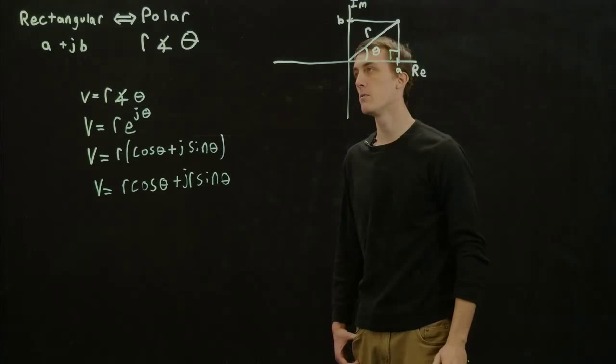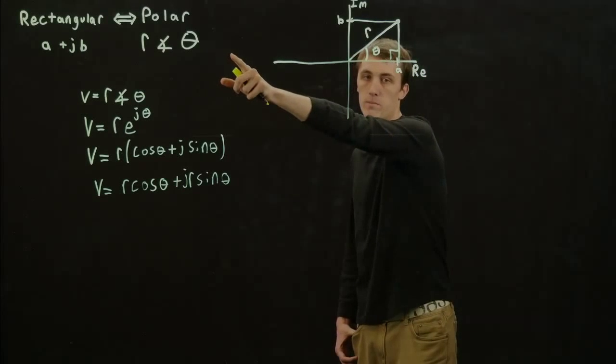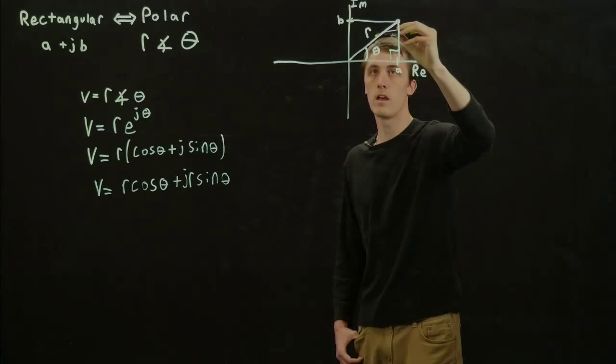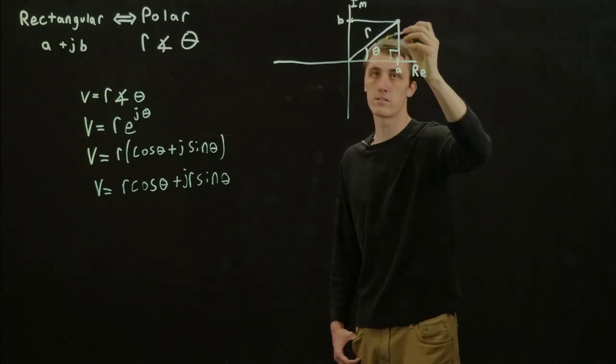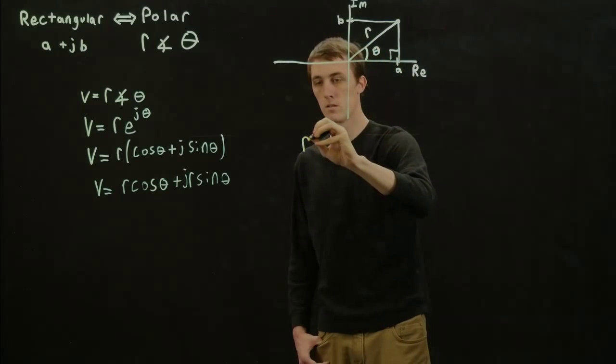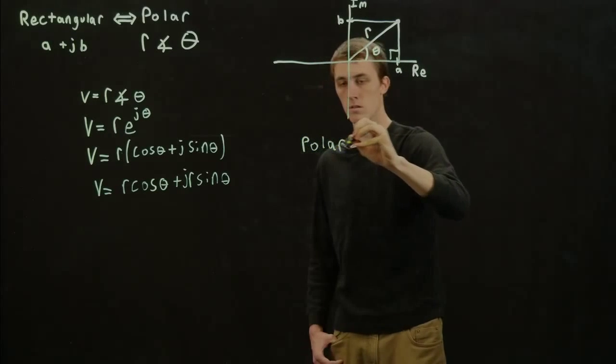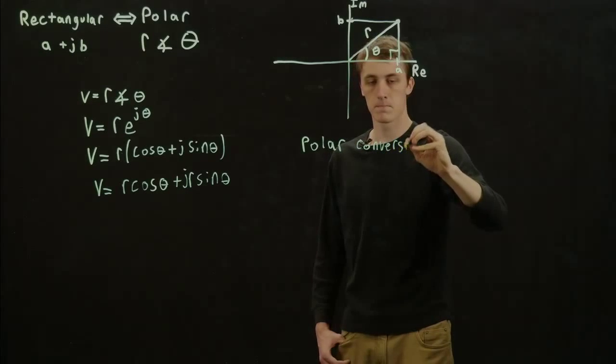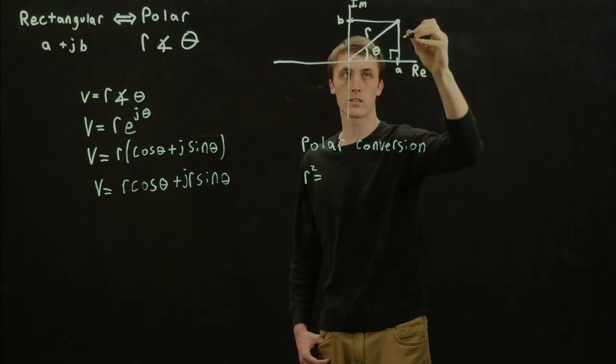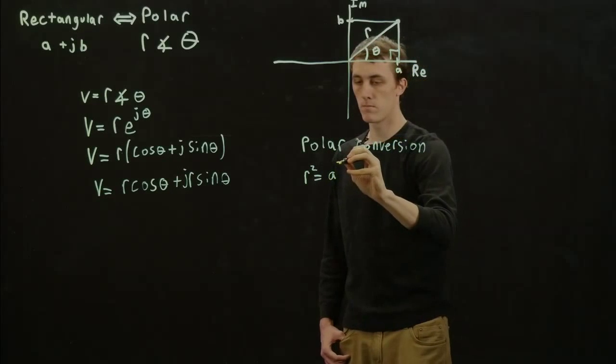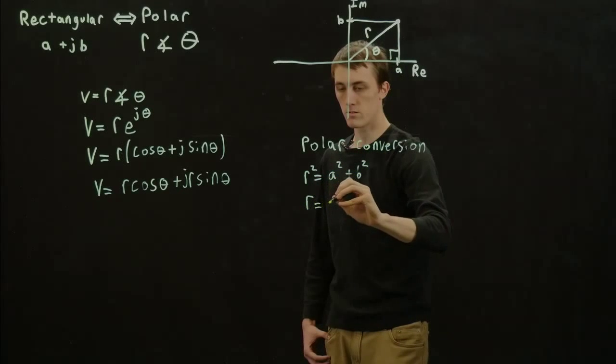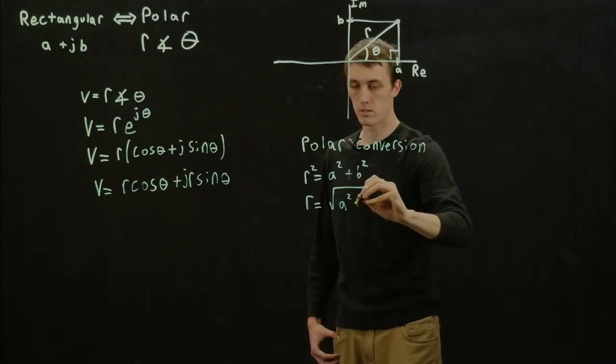If we want to go from rectangular to polar, we need to find what R is equal to, and this is just Pythagorean theorem. With a right triangle, we have R squared equal to A squared plus B squared, and R is just equal to the square root of A squared plus B squared.